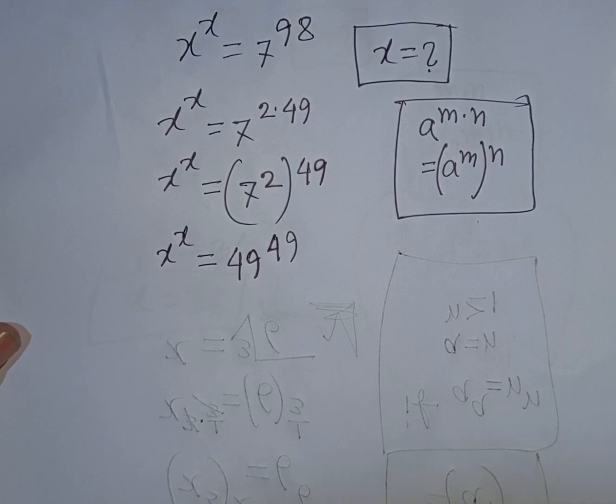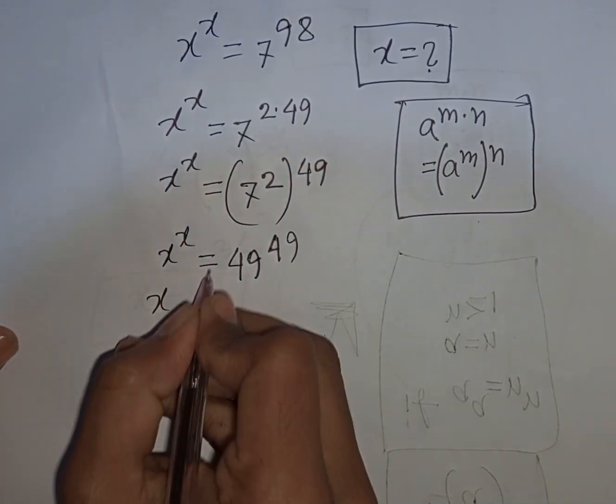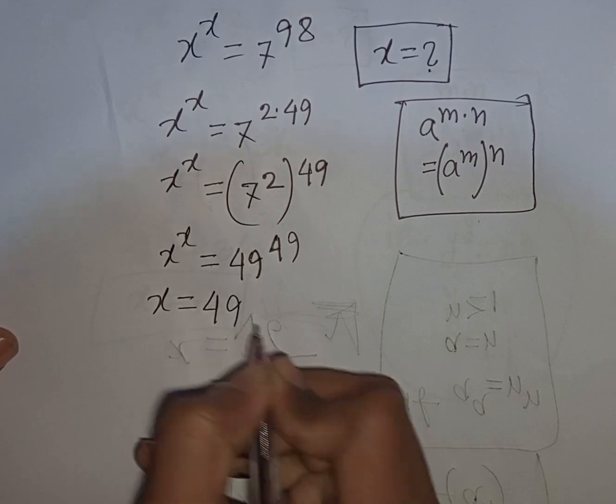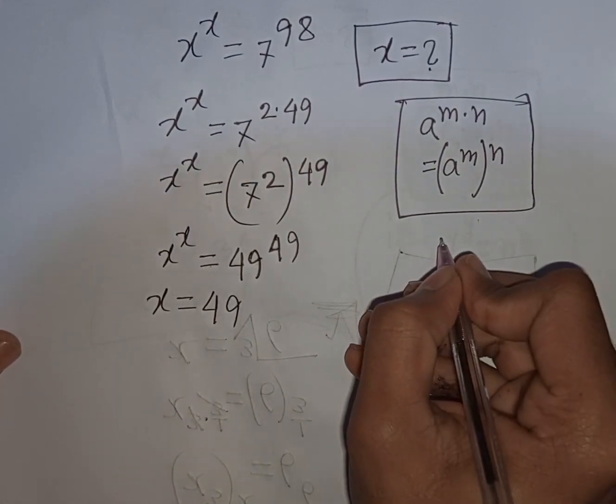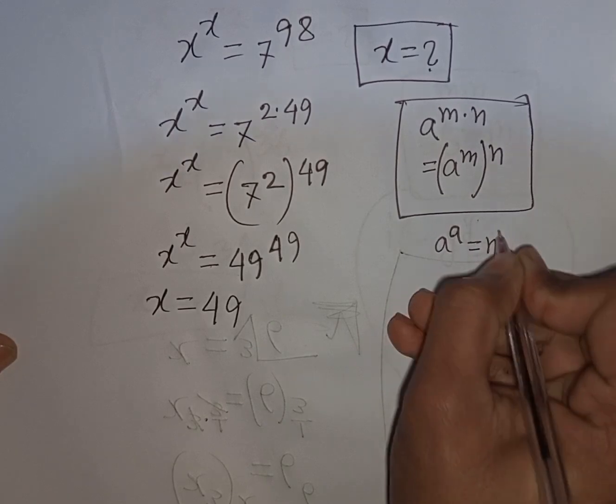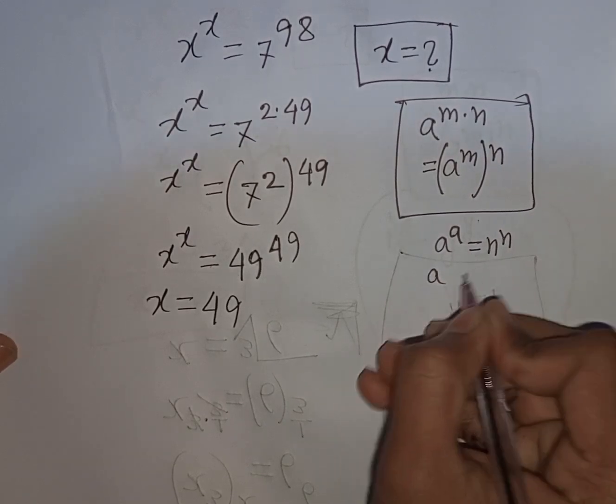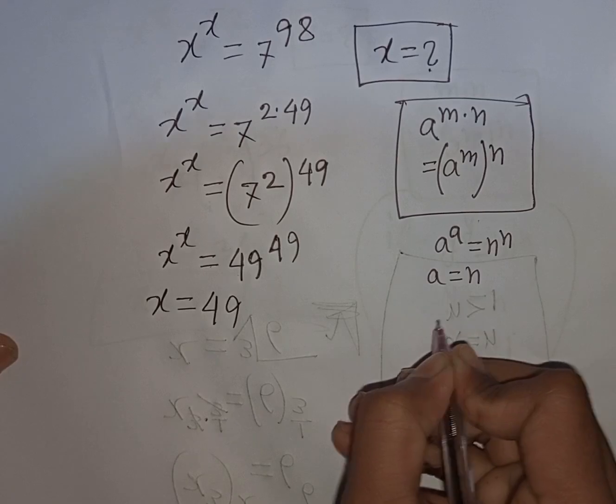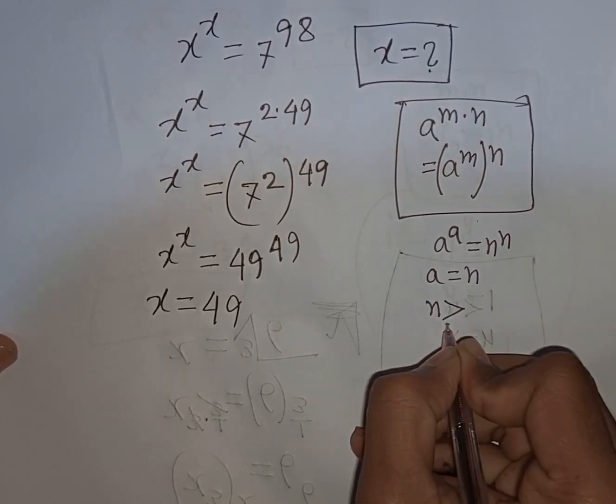You can write here x equals 49. According to this rule, a to the power a equals n to the power n, so a will be equal to n, where n is greater than or equal to 1.